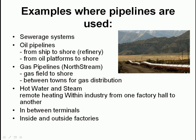Then we've got hot water and steam pipelines, found within industry or between factories. If you go through Huddersfield, come out of the college and turn right onto Leeds Road, on the right-hand side you'd see Syngenta and similar facilities - tons of pipelines you can see from the street. A lot of these pipes are used for high-pressure and low-pressure steam which is moved around the factory for various purposes. We've also got pipelines between terminals, and inside and outside factories.